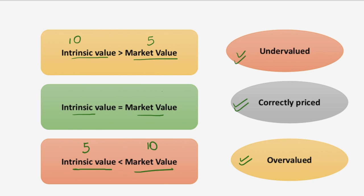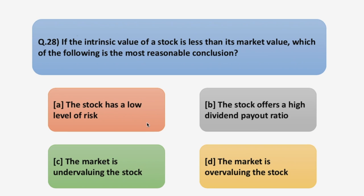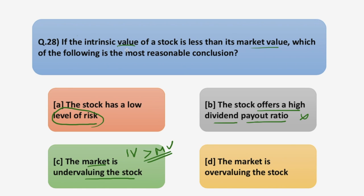Moving back to the question: Option A is not the answer because the level of risk has nothing to do with intrinsic and market value divergence. The second option about high dividend payout ratio is also incorrect. Third, 'the market is undervaluing the stock,' applies when intrinsic value is more than market value — the opposite of our scenario. Since intrinsic value is less than market value, the stock is overvalued in the market. So the correct answer is Option D.